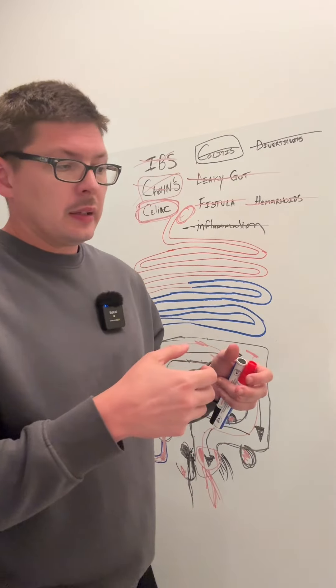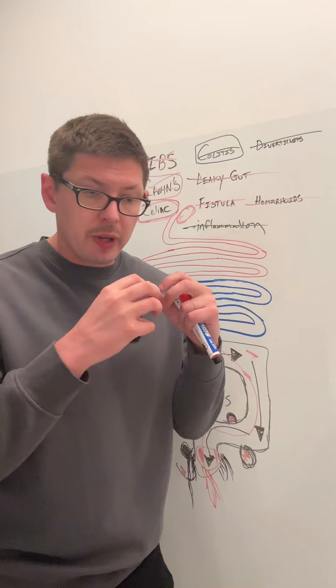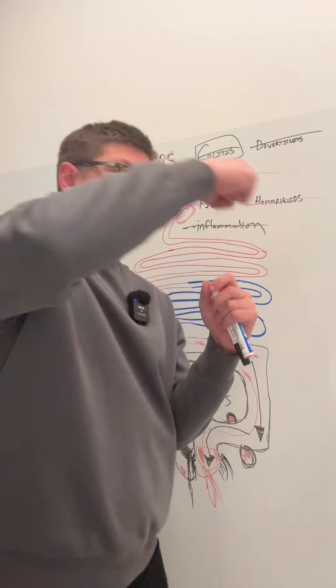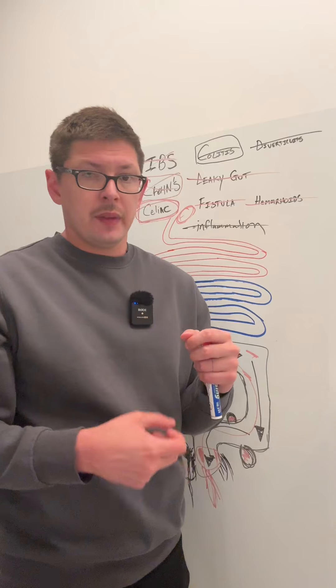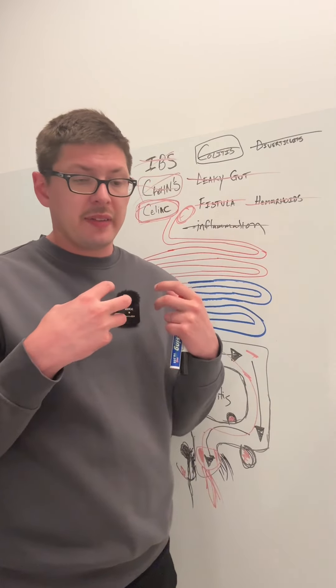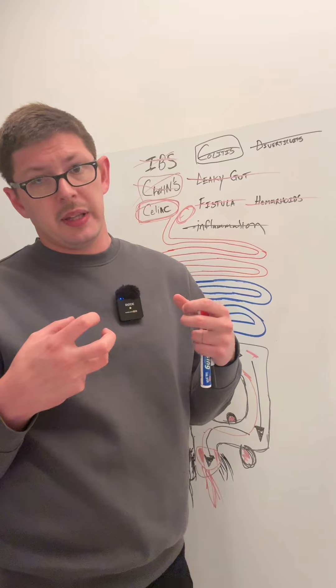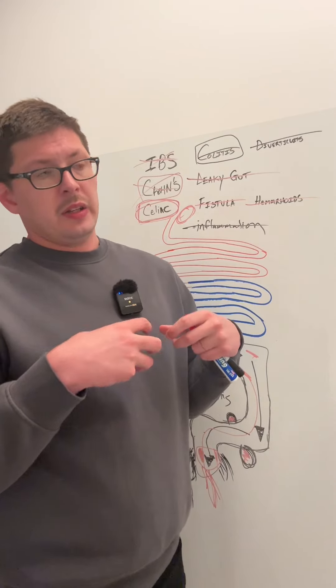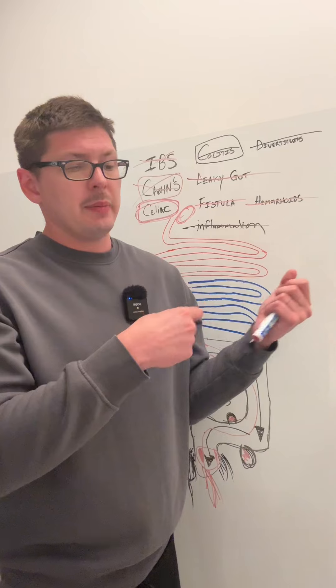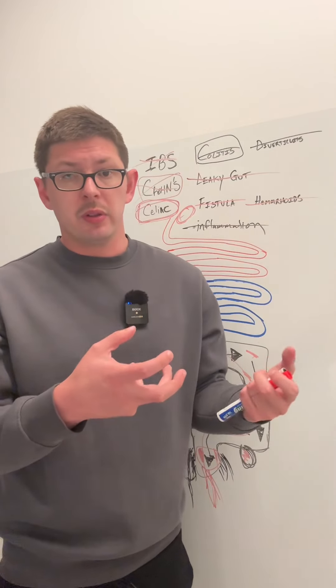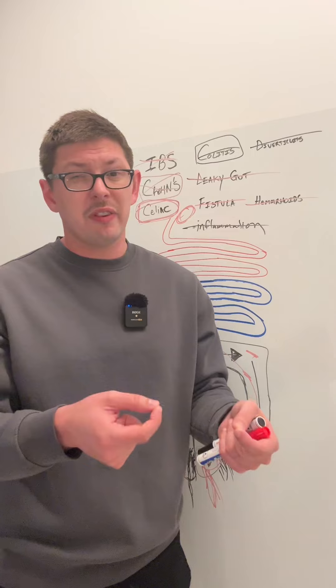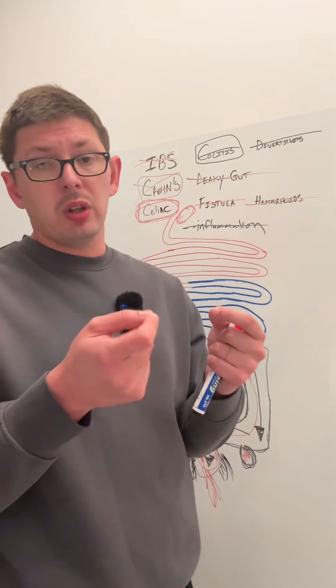But it could also be like, let's say you were eating a sandwich and then somebody punched you in the head. Now your brain's like, oh my God, every time I eat a sandwich, somebody's going to punch me in the head. And your gut goes into overdrive every time you come in contact with gluten. So those are the two ways someone could develop a true gluten allergy.